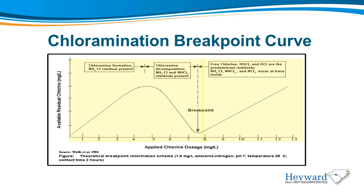This is the classic breakpoint curve, where a sample with a fixed ammonia concentration is increasingly dosed with chlorine, while the chlorine residual is measured. The initial ammonia concentration is 1 milligram per liter. On the x-axis is the applied chlorine dosage, and the y-axis is the available residual chlorine as measured. On the left side of the curve, where the chlorine dosage begins, there is excess ammonia, and the chlorine combines one-to-one with the ammonia to form monochloramine.